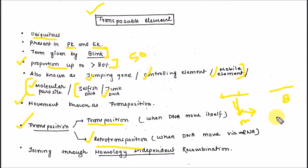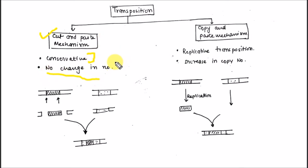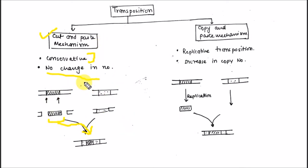Generally, transposable elements or transposons are flanked by inverted or direct repeats. The mechanism of transposition can be divided into two parts: copy-and-paste and cut-and-paste. In the cut-and-paste mechanism, which is conservative in nature, the transposable element is cut by endonucleases and the free transposable element ligates to another target site. There is no change in the number of transposable elements.